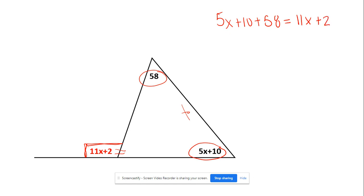Now we want to combine like terms on the same side. Well, 5X doesn't have anything to combine with. So 5X. Look, we have this 10 and the 58. They both combine together and we get plus 68 equals 11X plus 2.